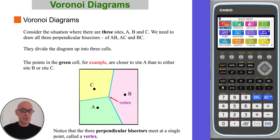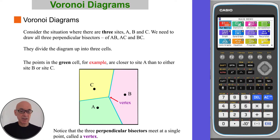Consider the situation where there are three sites, A, B and C. We need to draw all three perpendicular bisectors of AB, AC and BC, and they will divide the diagram up into three cells. The points in the green cell, for example, are closer to site A than to either site B or site C. Notice that the three perpendicular bisectors meet at a single point called a vertex.